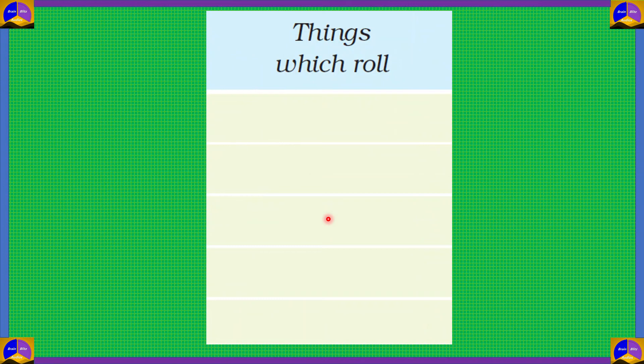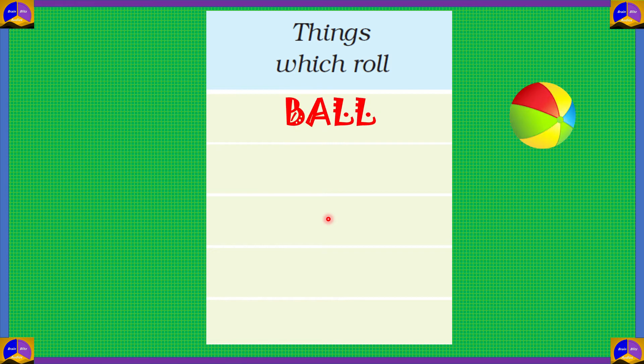Now, let's look at things which roll. A ball. If we push a ball, it goes round and round, which is a rolling motion. So, that means a ball will roll.